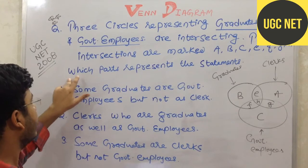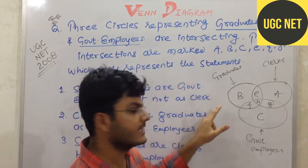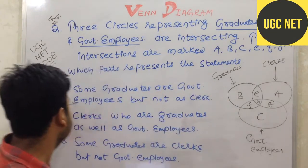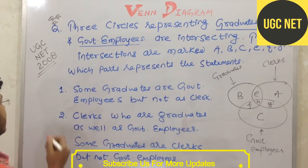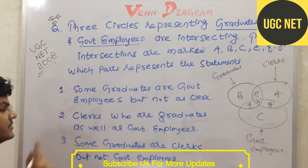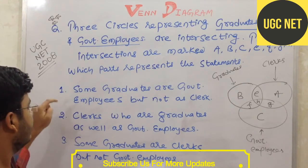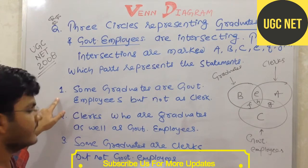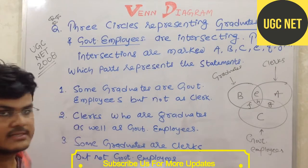We have to find which parts represent each statement. There are three statements — question 1, question 2, and question 3 — and we have to find the best answer for each.